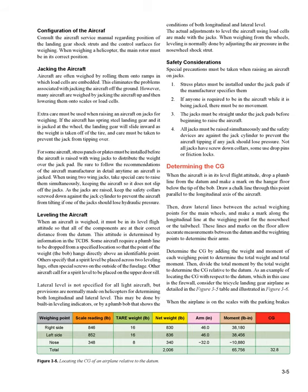Jacking the Aircraft: Aircraft are often weighed by rolling them onto ramps in which load cells are embedded, eliminating the problems associated with jacking the aircraft off the ground. However, many aircraft are weighed by jacking the aircraft up and then lowering them onto scales or load cells. Extra care must be used when raising an aircraft on jacks for weighing. If the aircraft has spring steel landing gear and is jacked at the wheel, the landing gear will slide inward as the weight is taken off the tire, and care must be taken to prevent the jack from tipping over. Stress panels or plates must be installed before the aircraft is raised with wing jacks to distribute the weight over the jack pad. When using two wing jacks, take special care to raise them simultaneously, keeping the aircraft level so it does not slip off the jacks. As the jacks are raised, keep the safety collar screwed down against the jack cylinder to prevent the aircraft from tilting if one of the jacks should lose hydraulic pressure.